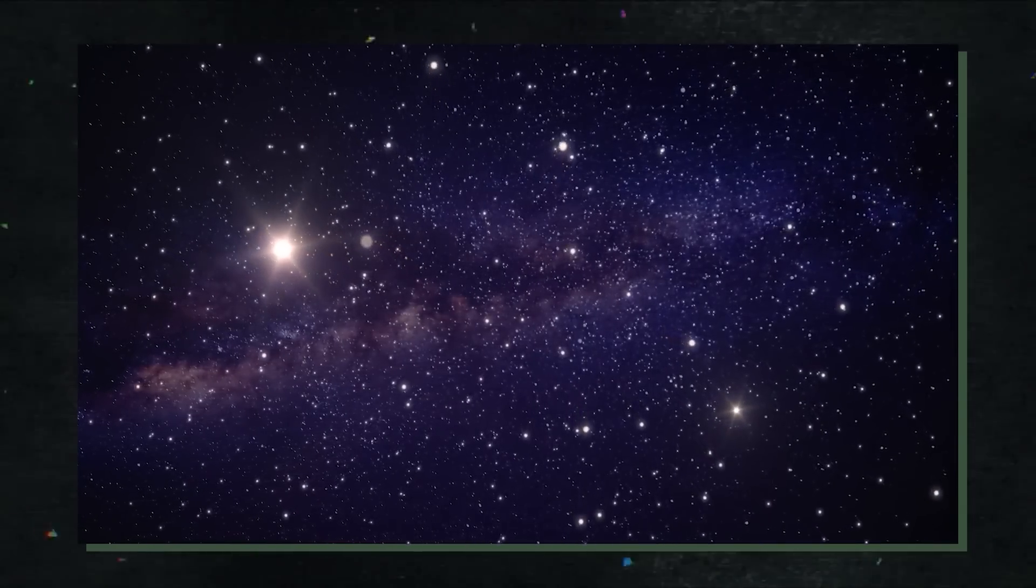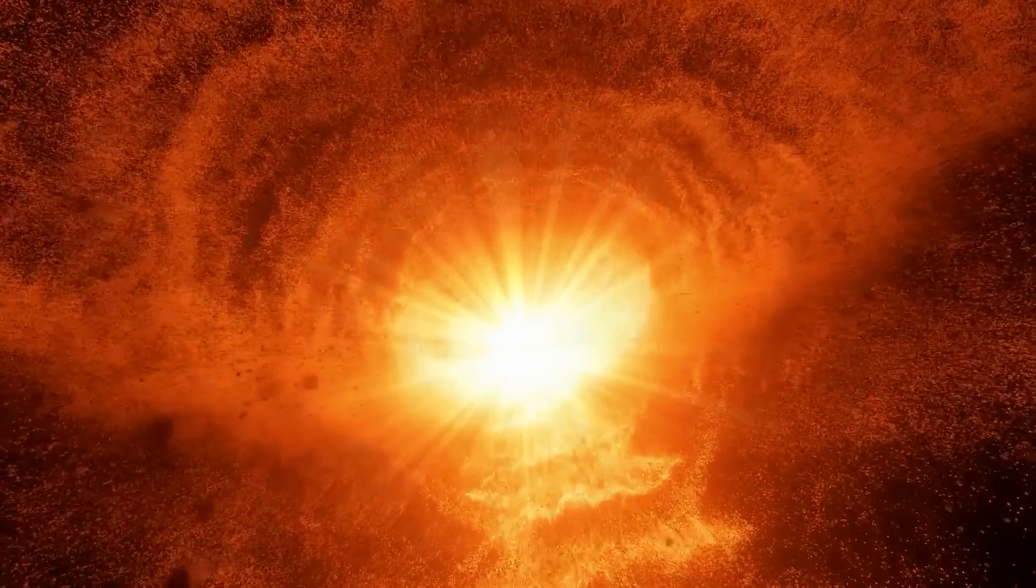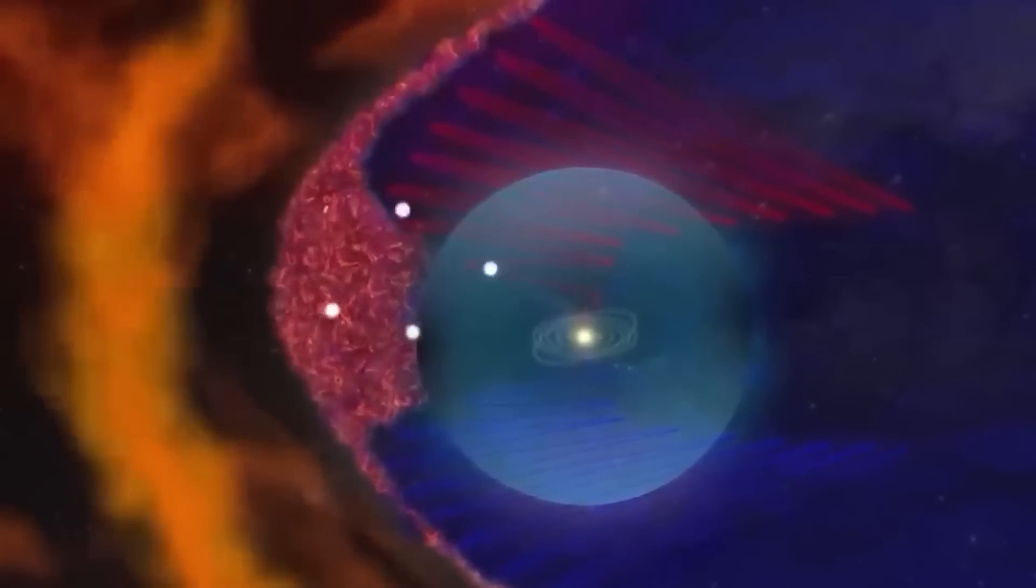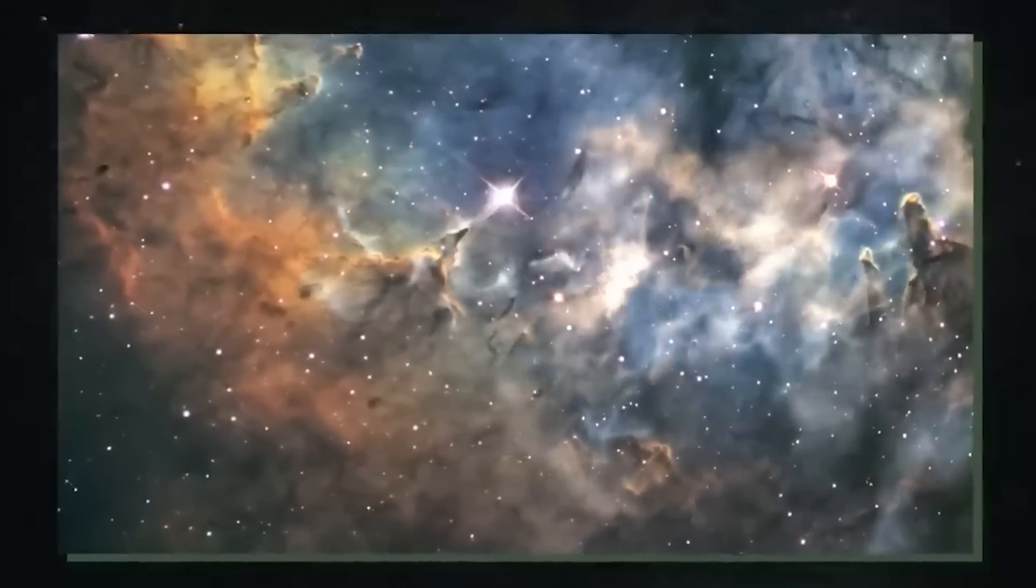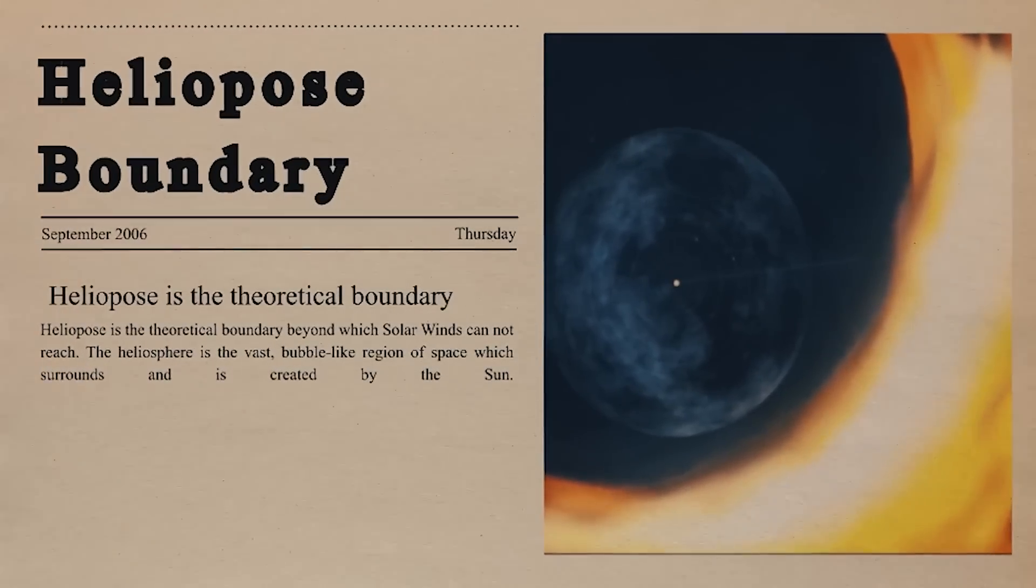Another hypothesis holds that a supernova explosion's shockwave causes the interstellar surprise. A shockwave is produced when a star explodes in a supernova and travels across the interstellar medium, compressing the gas and dust and raising its temperature. This may be the cause of Voyager 2's observed abrupt drop in temperature and rise in plasma density. The interstellar surprise could also be a normal variation in the interstellar medium, which is still poorly understood. Scientists now have a rare opportunity to examine the interstellar medium in depth and learn more about the intricate interactions between the solar wind and the interstellar medium thanks to the data from Voyager 2.